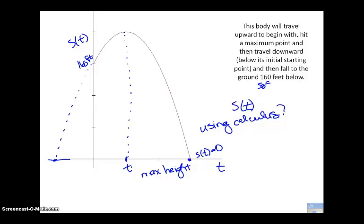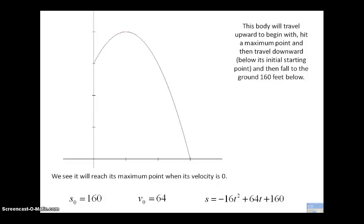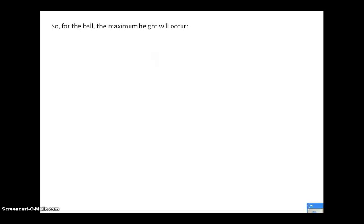Using calculus, what's an easier way to find the maximum point on this ball's position over time? Think of velocity. That's where the velocity function equals zero. It's going to reach its maximum point when its velocity equals zero. So all we've got to do is find the velocity function, which is the derivative of the position function with respect to t, and set it equal to zero. So the ball will be at its maximum height at t equals 2.